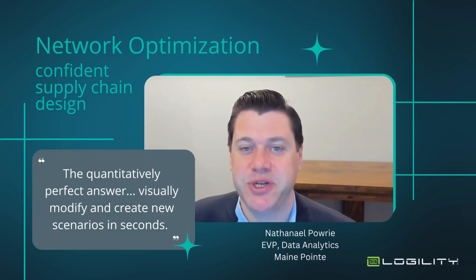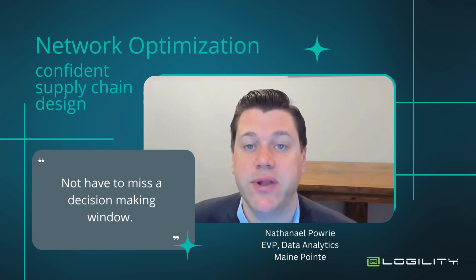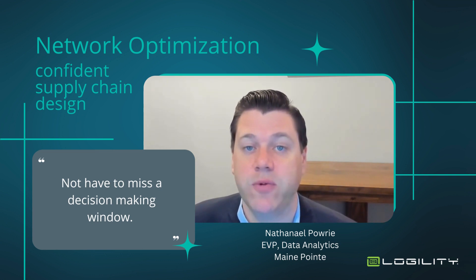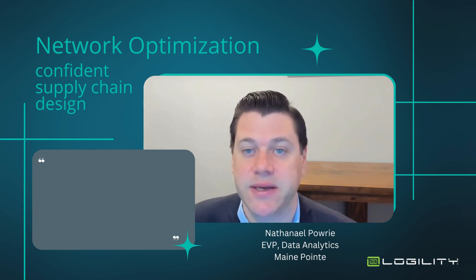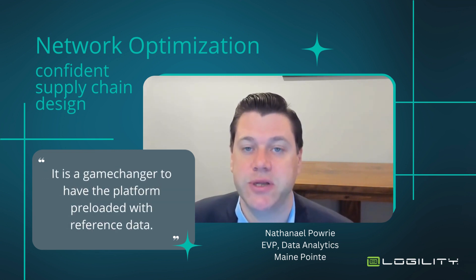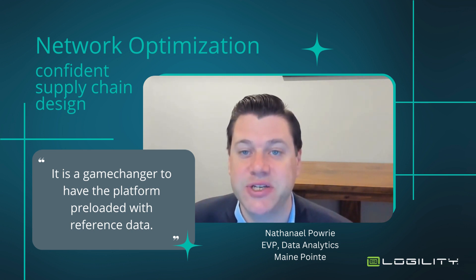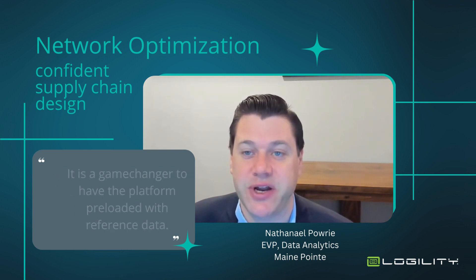Vagility's network optimization solution gives us the quantitatively perfect answer by allowing us to visually modify and create new scenarios in seconds. This allows us to balance our clients' questions and not have to miss a decision-making window by engaging in a data hunt. It is a game-changer to have the platform preloaded with transportation, warehousing, and labor cost reference datasets that represent accurate historical averages, providing the best indication of relative prices for our scenarios.